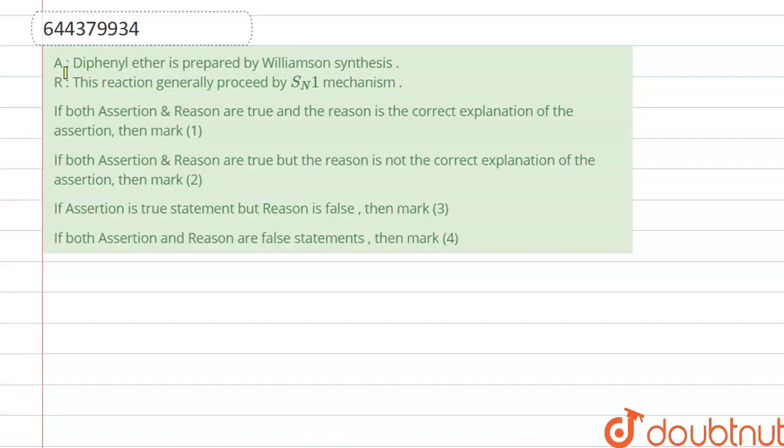Hello everyone, here the question is assertion and reason argument. Assertion said that diphenyl ether is prepared by Williamson synthesis. And the reason said that this reaction generally proceeded by SN1 mechanism.